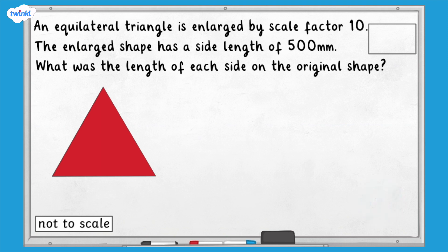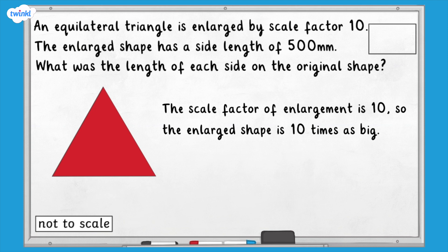The shape was enlarged by scale factor 10, so the enlarged shape is 10 times as big. To find the original length, we need to make the measurement 10 times smaller. 500 divided by 10 is 50, so the length of each side on the original shape was 50 millimeters.